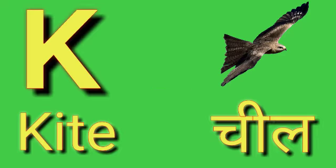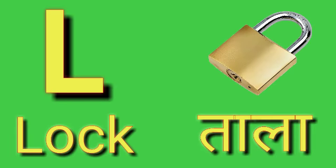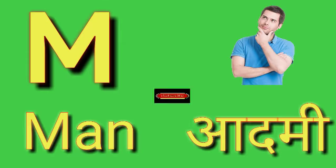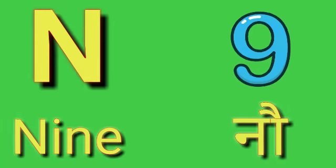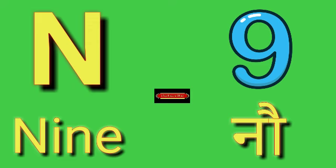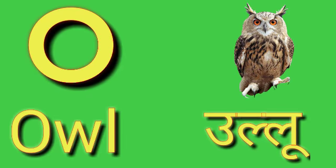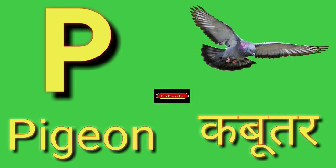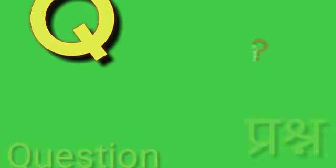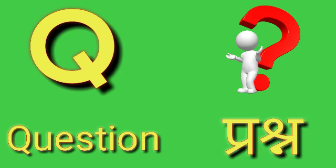K for Kite, Kite means Seal. L for Lock, Lock means Tala. M for Man, Man means Admi. N for Nine, Nine means No. O for Owl, Owl means Ullu. P for Pigeon, Pigeon means Kabutar. Q for Question, Question means Prussian.